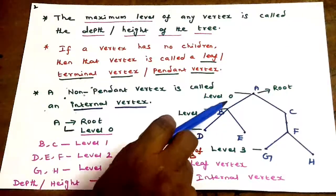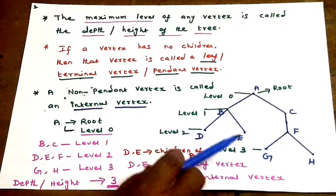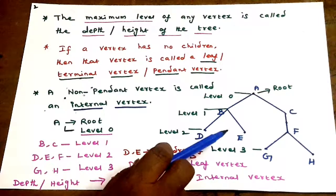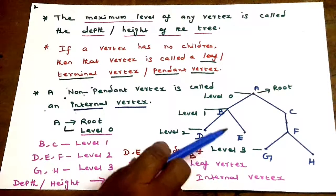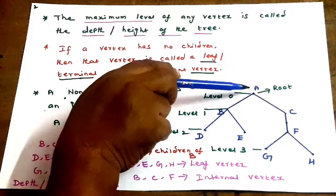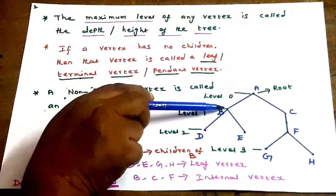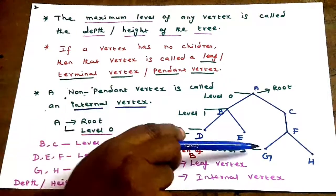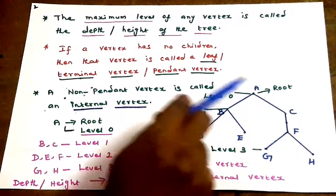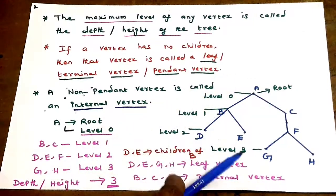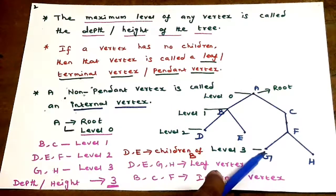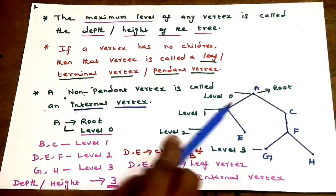The maximum level of any vertex is called the depth or height of the tree. Level 0, level 1, level 2, level 3 — the tree height or depth is 3.